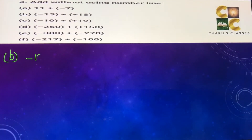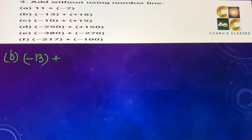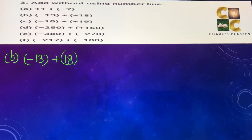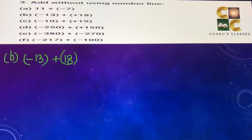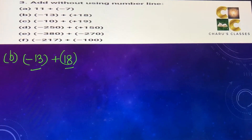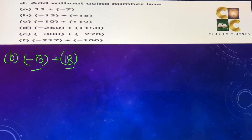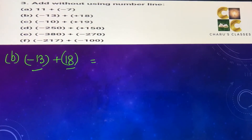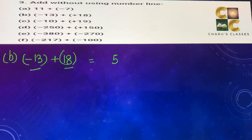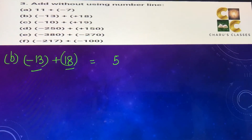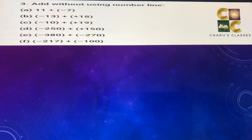Part (b): minus 13 plus 18. One number is positive and one is negative, so we subtract: 18 minus 13 equals 5. The bigger number is 18, which is positive, so the answer is positive 5.